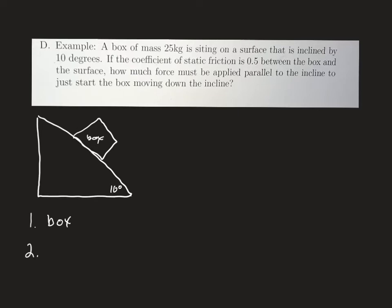Now let's identify what forces are acting on the box. We have a mass of 25 kilograms, so that tells us there is a weight — a force due to gravity pointing down. Because we have the rotated coordinate system, we're going to have negative y and positive x. The box is sitting on a surface, so there is a normal force, and in the rotated coordinate system that force normal is in the positive y direction.